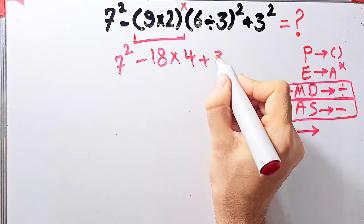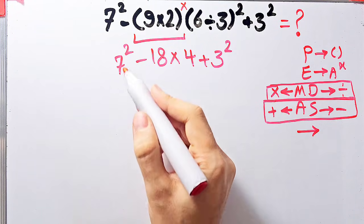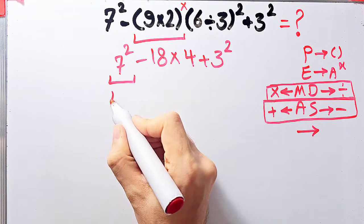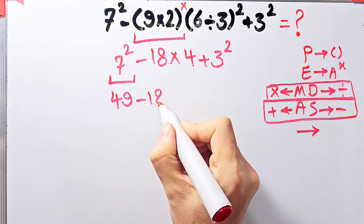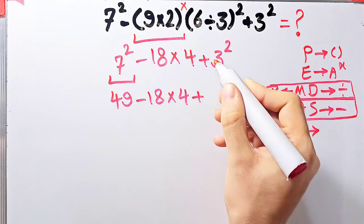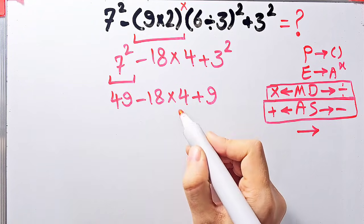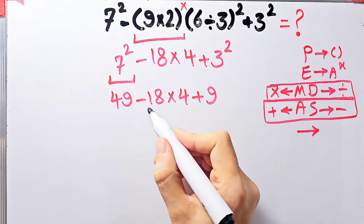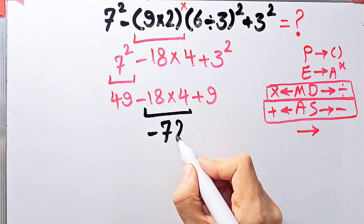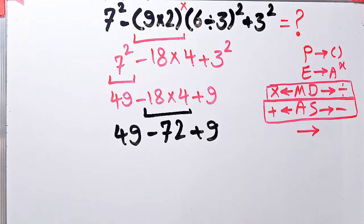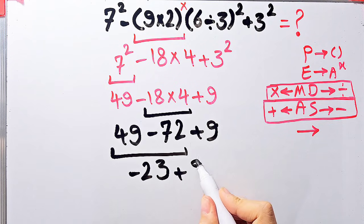Now we simplify the exponents: 7² equals 49, and 2² equals 4, and 3² equals 9. We have subtraction, multiplication, and addition. First simplify the multiplication: negative 18 times 4 equals negative 72. Now: 49 minus 72 plus 9. 49 minus 72 equals negative 23, and negative 23 plus 9 equals negative 14. The final answer is negative 14.